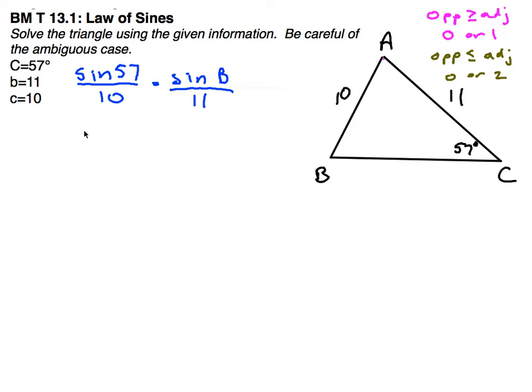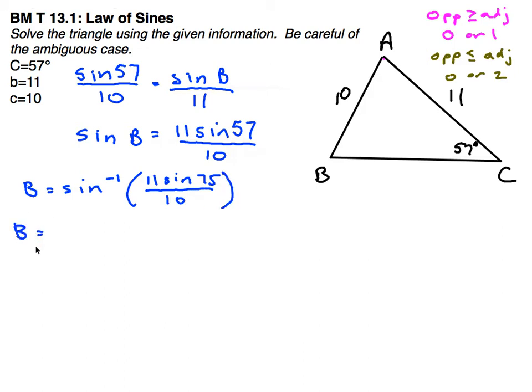When we cross-multiply and divide, we get the sine of B to equal 11 times the sine of 57 divided by 10. And then I can use the inverse to find out what angle B is. So I'll do the inverse of 11 sine of 57 divided by 10, and I get 67.3 degrees.